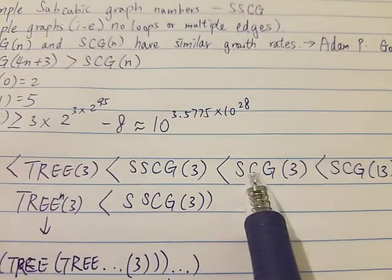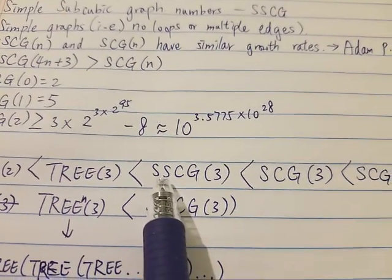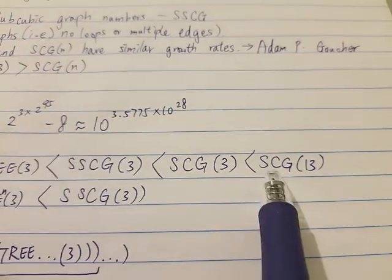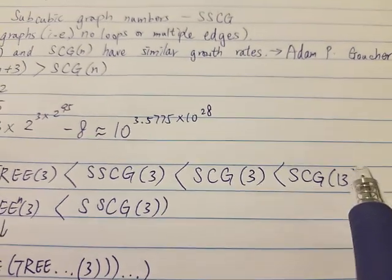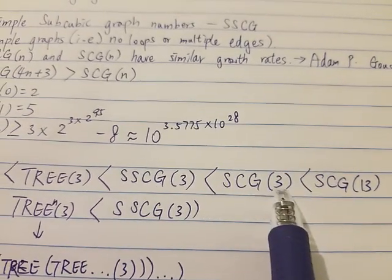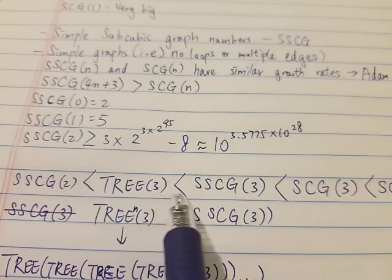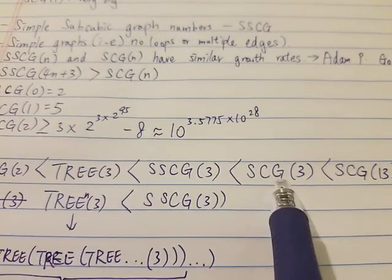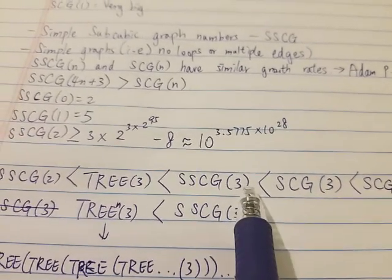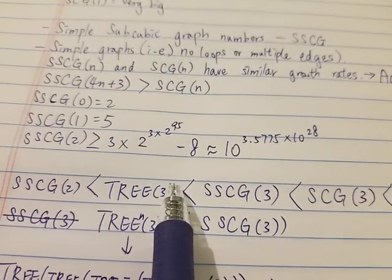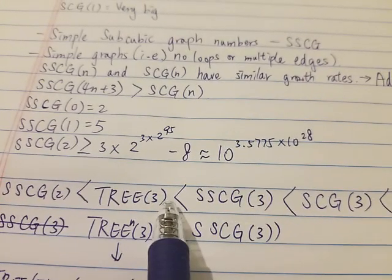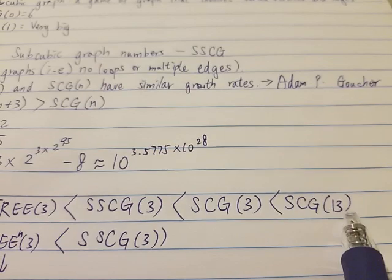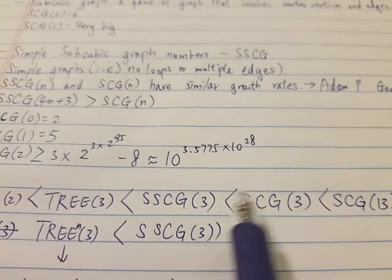SCG(3) is, of course, bigger than SSCG(3). And SCG(13) is much, much, much bigger than SCG(3). So just putting 3 into either of these functions already gives a result much, much bigger than TREE(3). And of course, SCG(13) is much, much bigger than all of those.